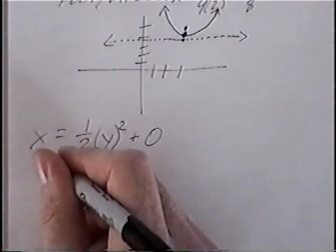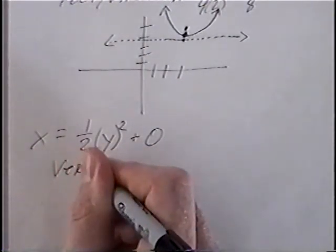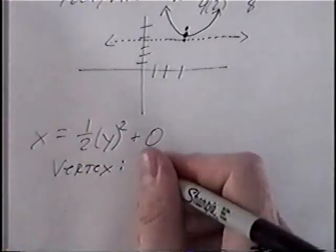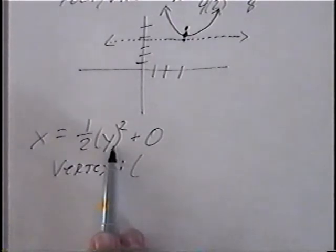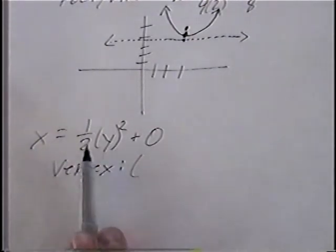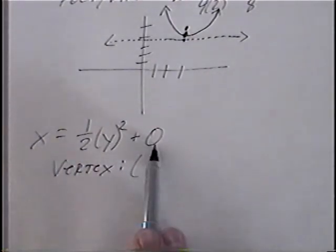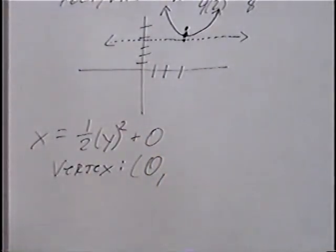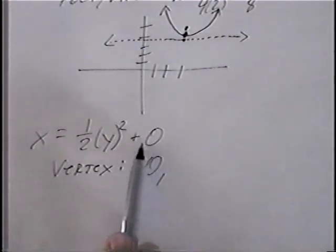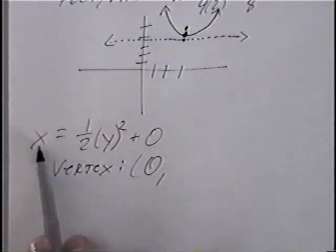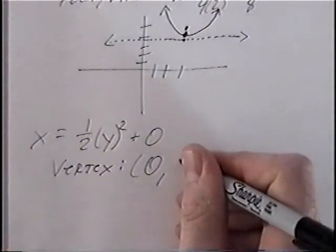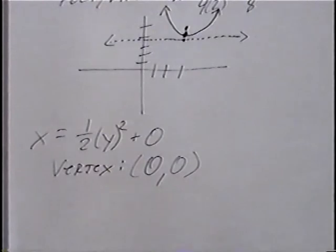First part is to find the vertex. The x value is normally inside the parentheses, but since x and y switched, the x value would be the number outside the parentheses, which would be zero. And the y value, again in standard form, would be the number at the end, but since x and y switched, the y value would be the number inside the parentheses. If there's no number there, it would be zero.